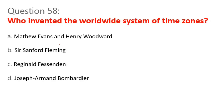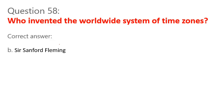Question 58. Who invented the worldwide system of time zones? A. Matthew Evans and Henry Woodward. B. Sir Sanford Fleming. C. Reginald Fessenden. D. Joseph Armand Bombardier. Correct answer: B. Sir Sanford Fleming.